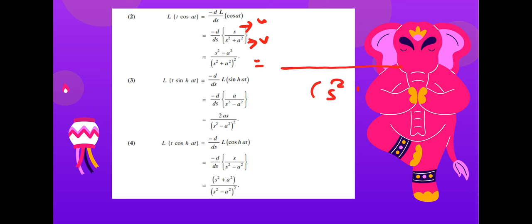Applying the quotient rule again, v² is (s² + a²)². Here u is s and v is s² + a². Differentiating: v·du gives s² + a², and u·dv gives s times 2s, which is 2s². This yields s² + a² minus 2s² giving s² minus a², divided by (s² + a²)².